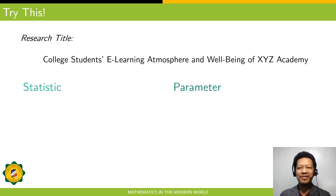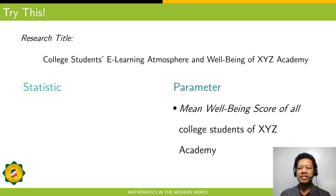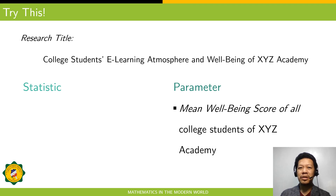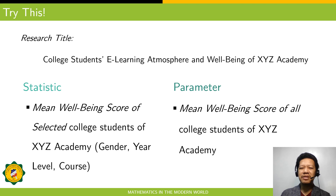To check your understanding, identify the parameter and statistic in the given research title. The parameter is the mean well-being score of all college students of XYZ Academy — since well-being can be measured using a standardized test or scale to get a score. And for statistics, we have the mean well-being score of selected college students of XYZ Academy.